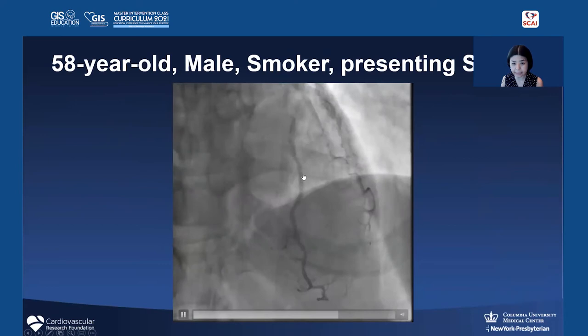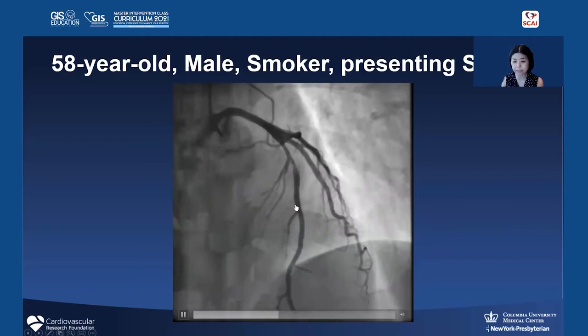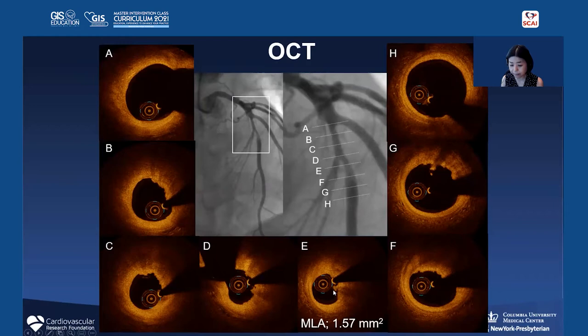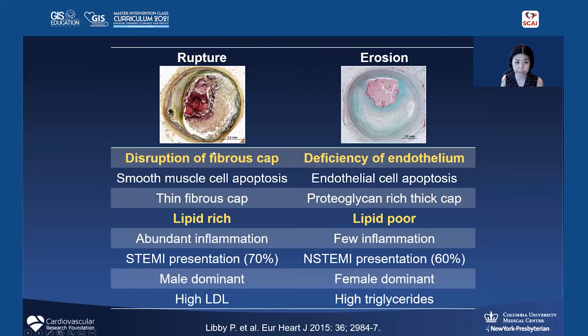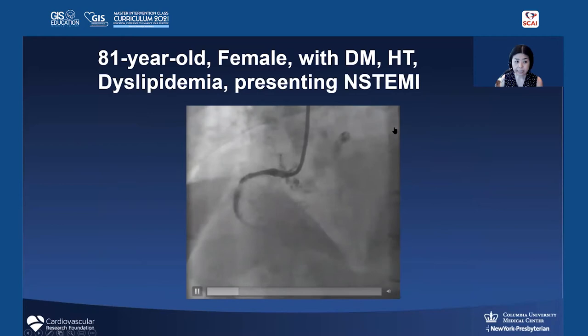The third case is a 58-year-old male with a small scar presenting with an intermediate region on angiography. OCT revealed a small amount of platelet thrombus, with attenuation indicating lipidic plaque, but a very thick fibrous cap on top — relatively normal proximally and distally. This is very typical plaque erosion, quite different from rupture. Rupture typically occurs in lipid-rich plaque with disruption of the fibrous cap, whereas erosion has a thick cap and causes thrombotic events due to endothelial deficiency.